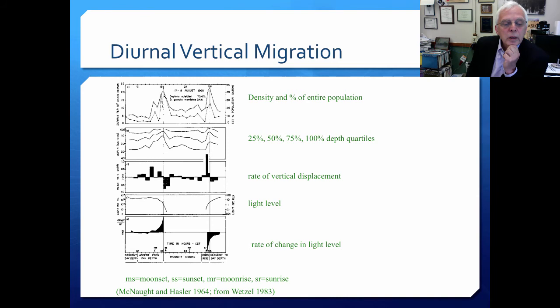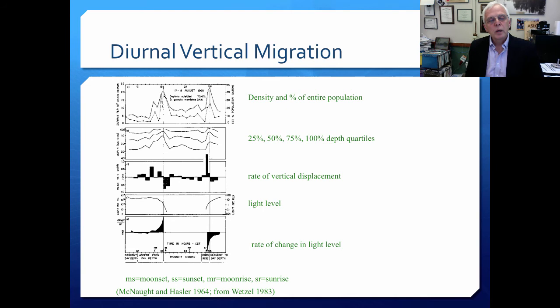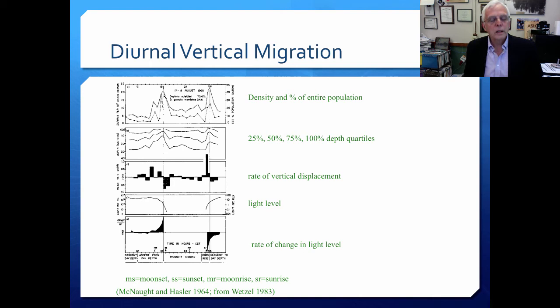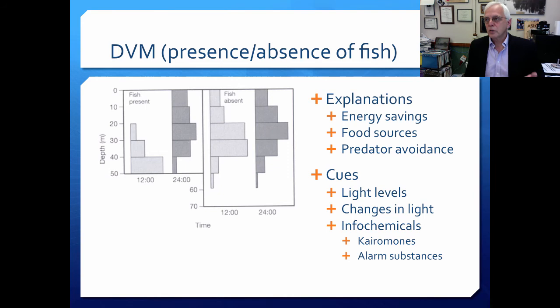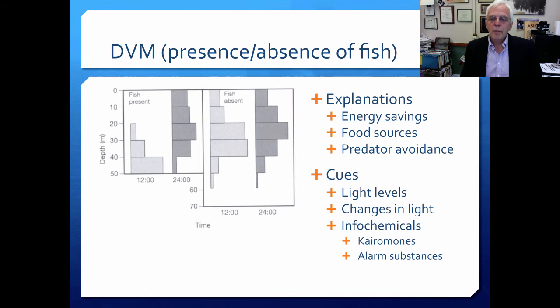I used to keep a big column of daphnia in my laboratory in Montreal. If I would turn on the lights or turn off the lights, I would get them to instantly change their position in the water column. Turning on the lights when they were high in the water column, they would drop to the bottom. The explanations offered for diurnal vertical migration include energy savings, movement to food sources, and also migrating in a way that might help them avoid predation from visual predators by being in the water column when it has become dark.